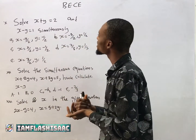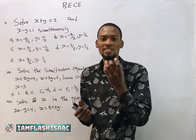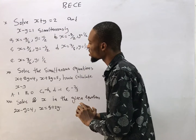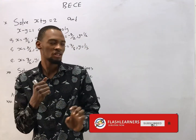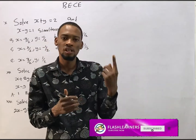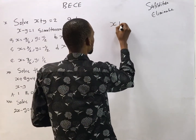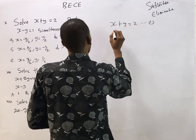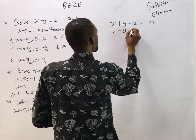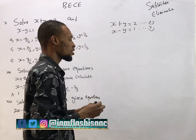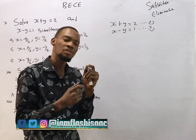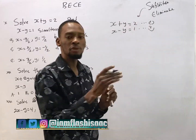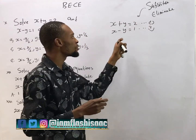These are BEC simultaneous equation questions. When given a simultaneous equation, you can choose to solve it using the substitution method, elimination method, or graphical method. Let's bring out the equations: x plus y equals 2 — this is equation 1 — and x minus y equals 1 — equation 2. After numbering the equations, we are using the substitution method.